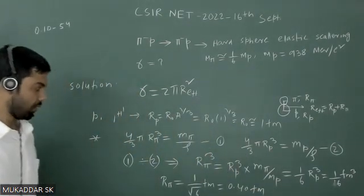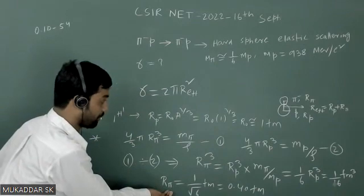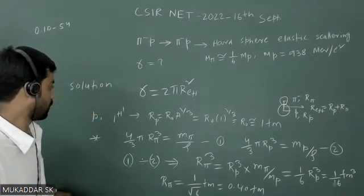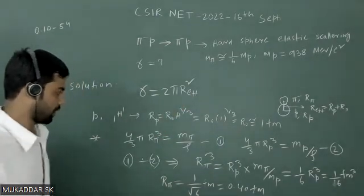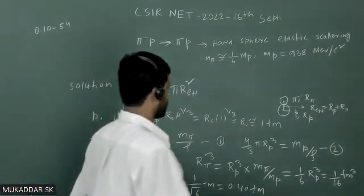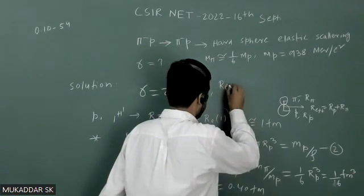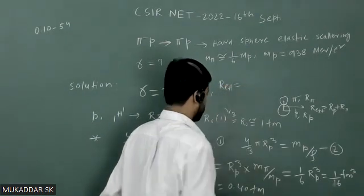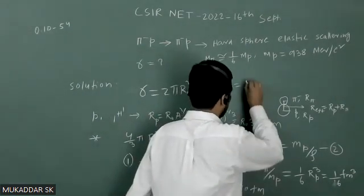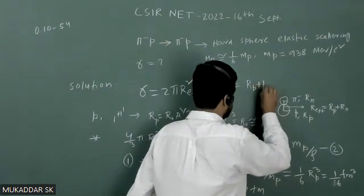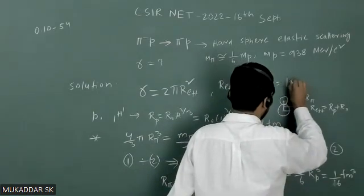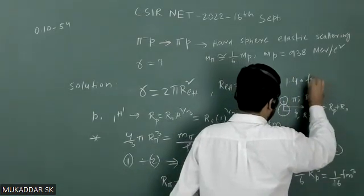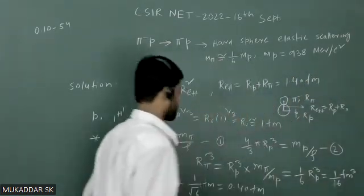Now we have obtained the value of r_π as well as the value of rₚ. So we can calculate r_effective now. So r_effective will be rₚ plus r_π. So it will be 1 + 0.40 = 1.40 femtometer.